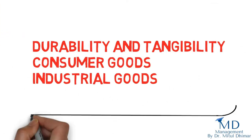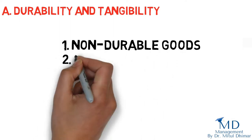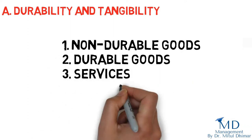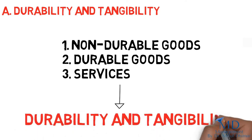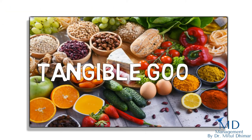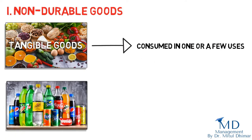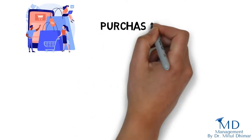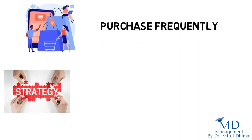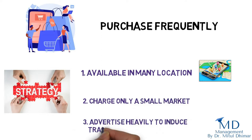Category A: Durability and Tangibility. Products are classified as non-durable goods, durable goods, and services. Number one: non-durable goods. Non-durable goods are tangible goods normally consumed in one or a few uses, such as soft drinks and soap. Because these goods are purchased frequently, the appropriate strategy is to make them available in many locations, charge only a small margin, and advertise heavily to induce trial.